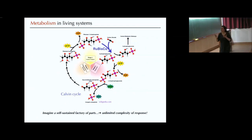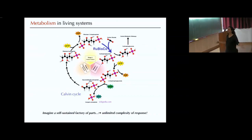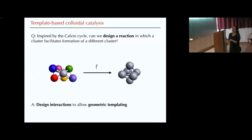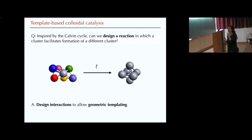It would be very interesting if you had a system where you start from one structure, and that one catalyzes formation of many other ones that you program. All of a sudden you have a factory of parts that can come together and form something bigger. We are going to try to do this using the octahedron again. The question is: if we start from a structure like this — a seven-particle cluster — can we somehow catalyze formation of an octahedron? We are going to use the same template-based ideas we used for the replication.